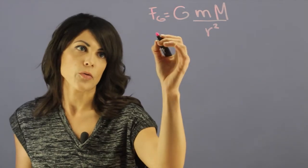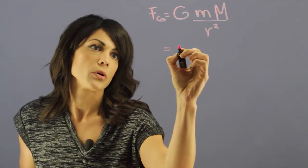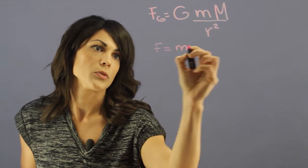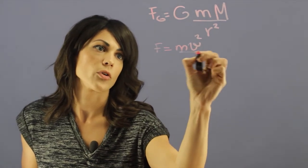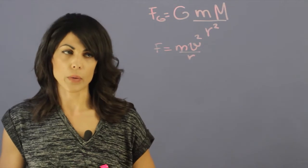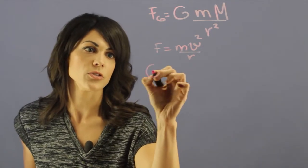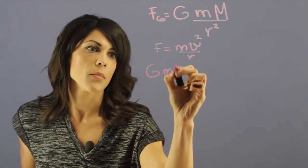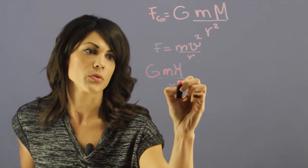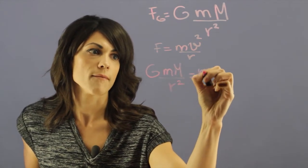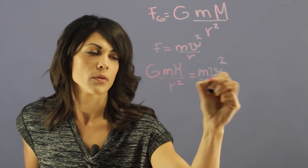We can look at the centripetal force and we can get to this force is equal to mv squared over r, and we can make these two equal. So now if we have GmM over r squared equal to mv squared over r.